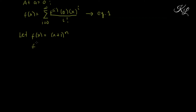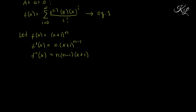Let us compute the derivatives. The first derivative of f at x is n times (x + 1)^(n minus 1). For the second derivative, we have n times (n minus 1) times (x + 1)^(n minus 2). For the third derivative, n times (n minus 1) times (n minus 2) times (x + 1)^(n minus 3), and it goes on and on.